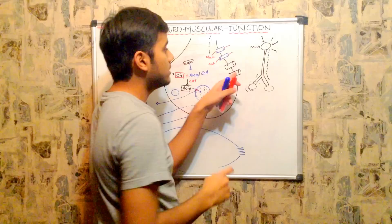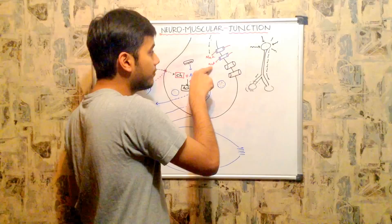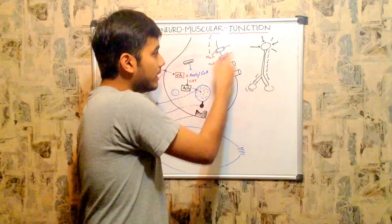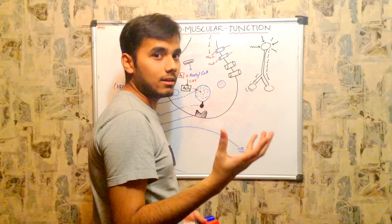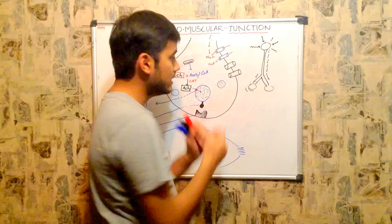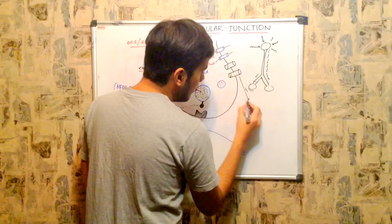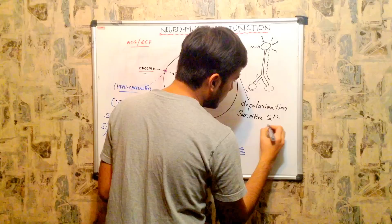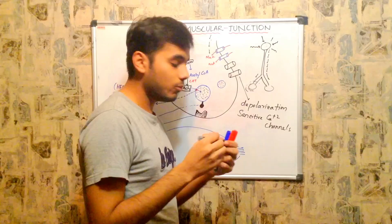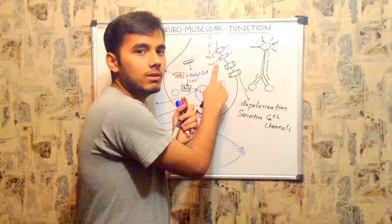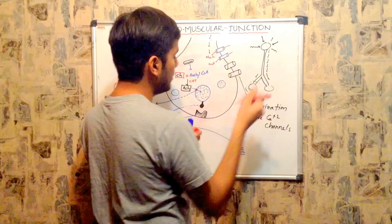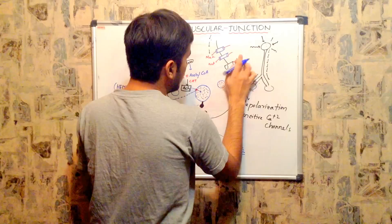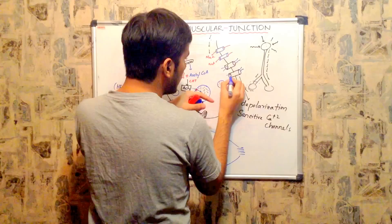When sodium enters the presynaptic membrane, the entire presynaptic nerve ending gets depolarized. The moment the nerve ending gets depolarized, the calcium channels open immediately. That is why we call these depolarization-sensitive calcium channels — they open only as a result of depolarization brought about by sodium influx. Once calcium channels open, there is influx of calcium into the nerve ending.